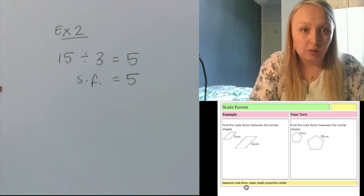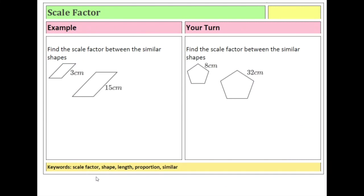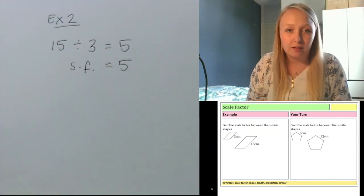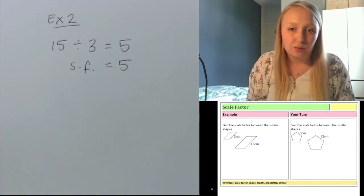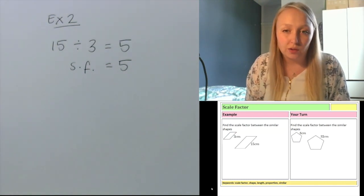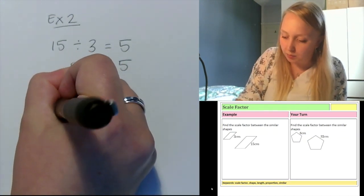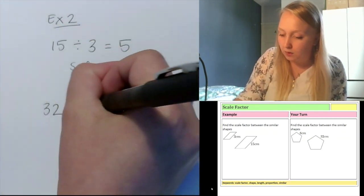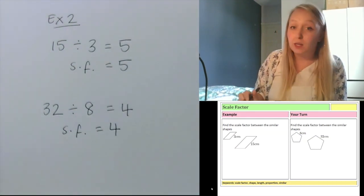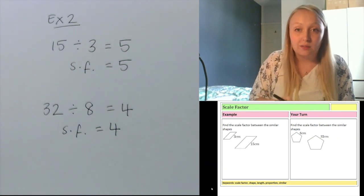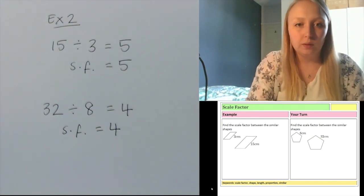I'd like you to have a go at the question on the right hand side. You've got a different shape this time but doing the same thing — finding the scale factor. Remember you can pause if you need here. Looking at the answers: you've got two parallelograms and you're given the corresponding side. 8 centimetres is the length of the small one and 32 centimetres is the length of the larger one. My sum is 32 divided by 8, which gives me 4. That tells me my scale factor is 4. It doesn't have units — it's just a scalar, so you just leave it as a number without units.